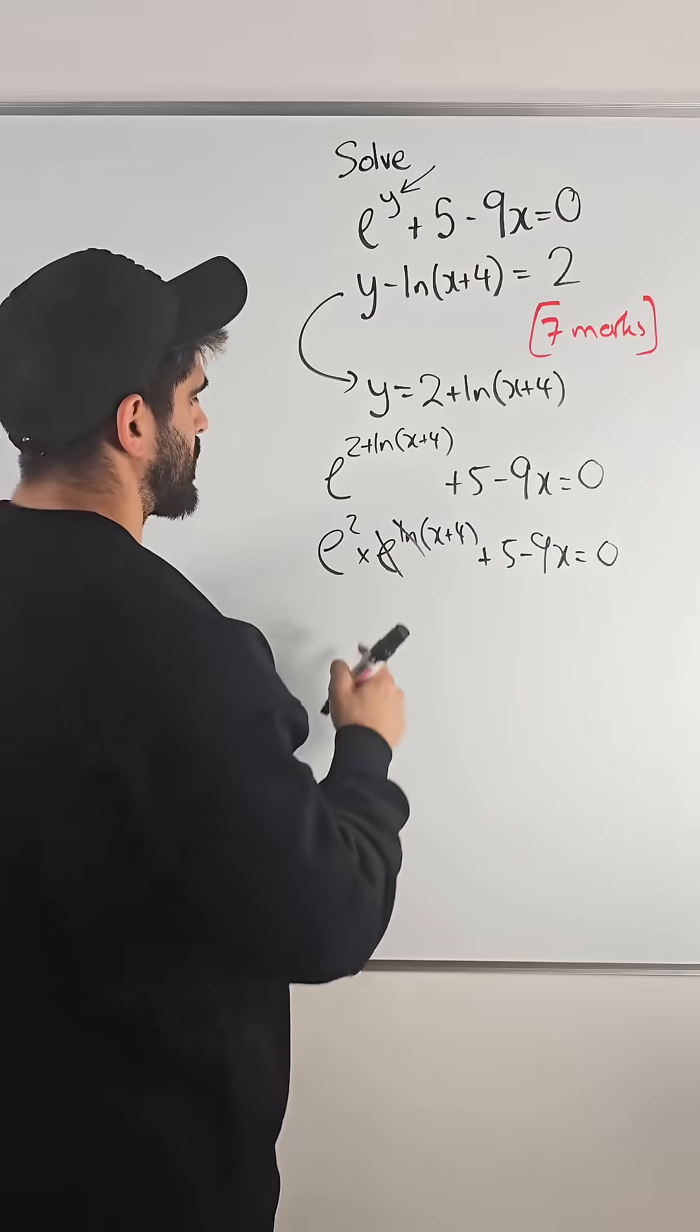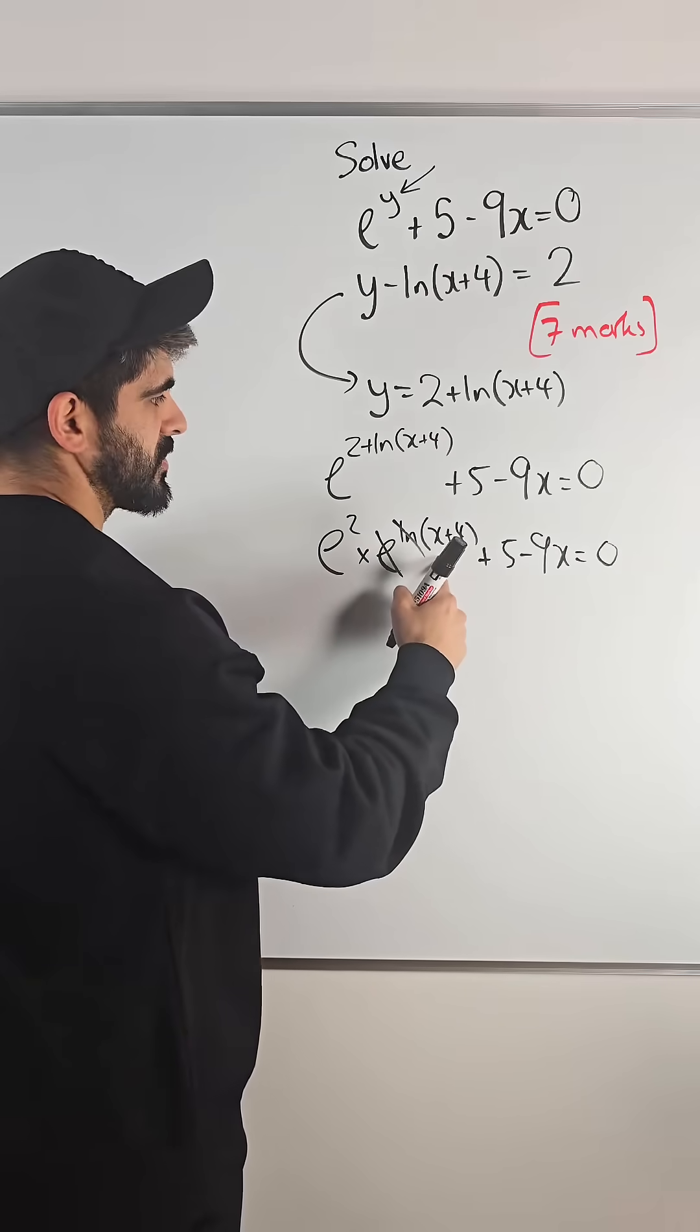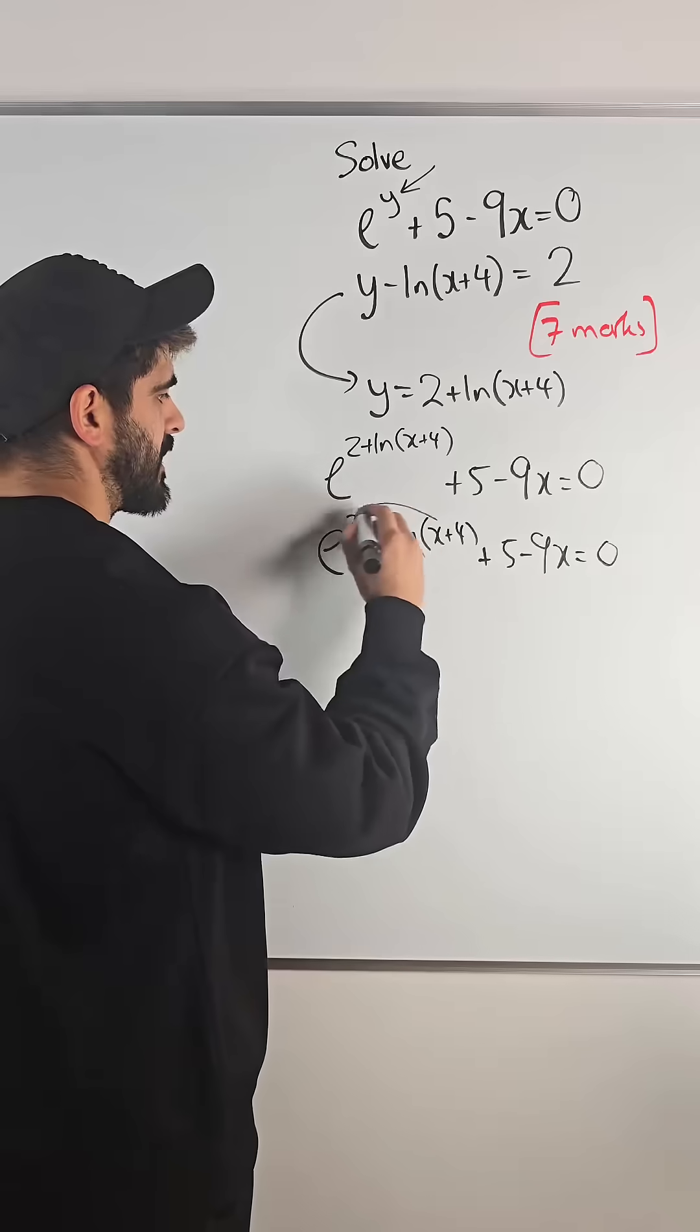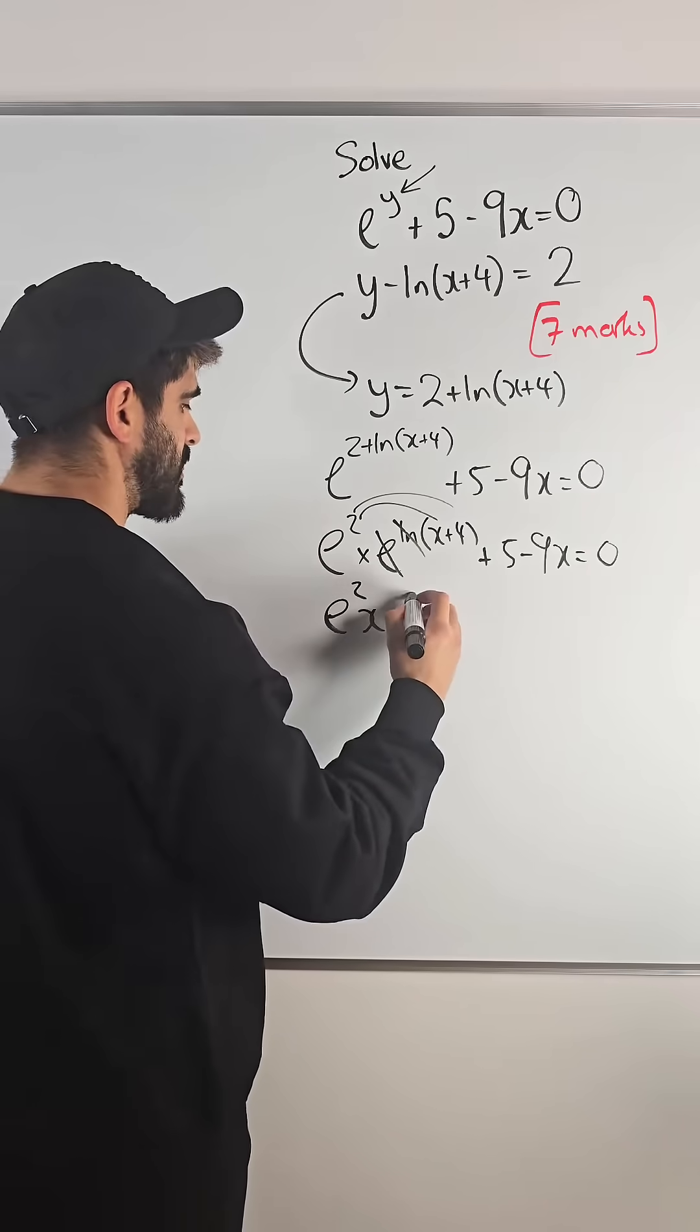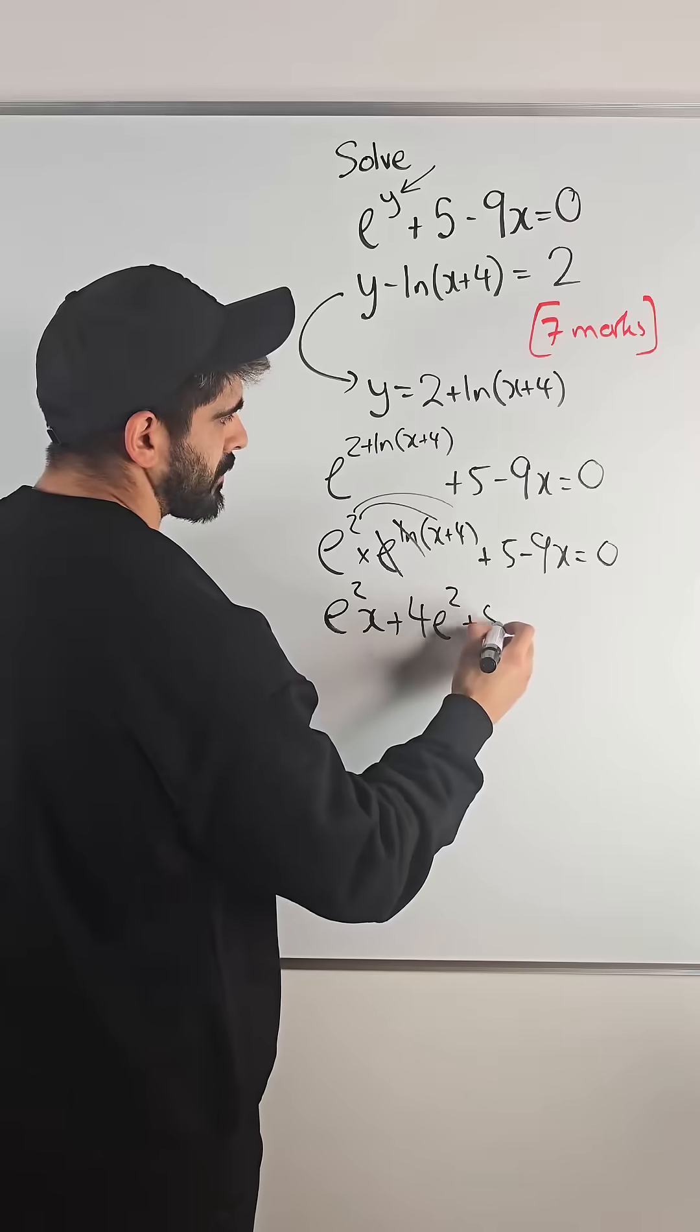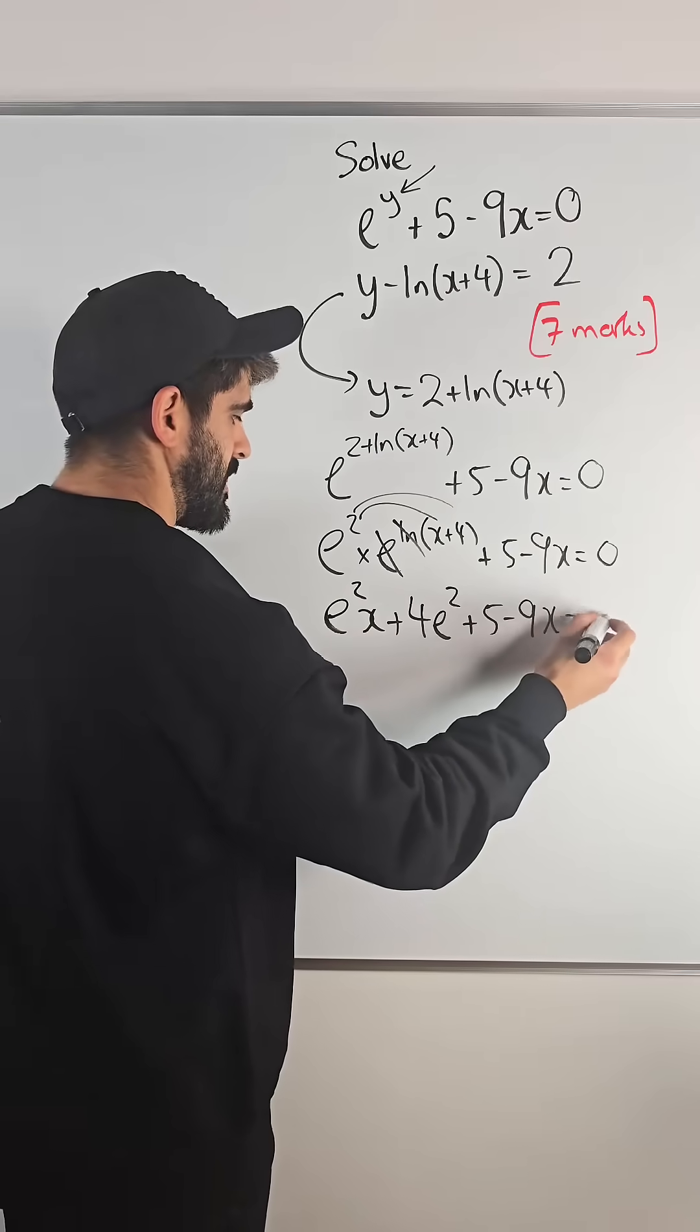E and ln cancel now, they are inverse functions. So we have e squared lots of this. We're going to rearrange for x, we need to expand the bracket here. So we get e squared x plus 4e squared plus 5 minus 9x is 0.